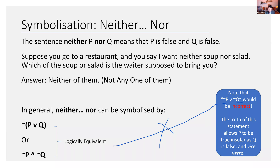Remember that disjunction is inclusive, so in order for 'not p or not q' to be true, all you need is one of those disjuncts to be true — you don't have to have both being false. Not p can be true, or not q can be true, and that's all it takes for this statement to be true. But clearly this isn't the case for 'neither nor' — we want both to be false.